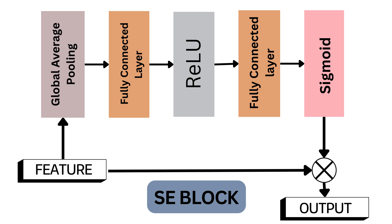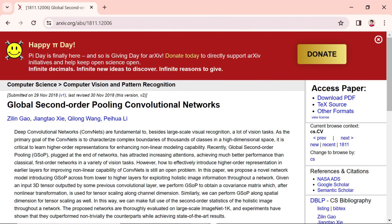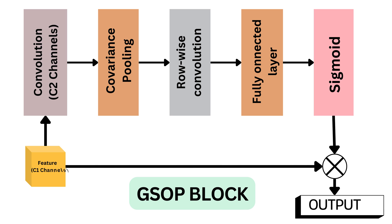To enhance the SE block's capacity to capture high-order statistics, Gao et al. proposed a refinement to the squeeze module, introducing a Global Second-Order Pooling, or GSOP, block to model high-order statistics while collecting global information. Similar to the SE block, the GSOP block comprises a squeeze module and an excitation module. In the squeeze module, the GSOP block initially reduces the number of channels from C1 to C2 using a one-by-one convolution, then computes the covariance matrix of C2 by C2 for different channels to capture their correlation. Row-wise convolution is then applied to the covariance matrix, establishing explicit relationships between each channel pair I and J.